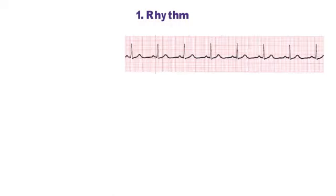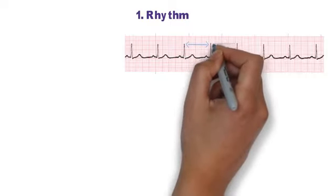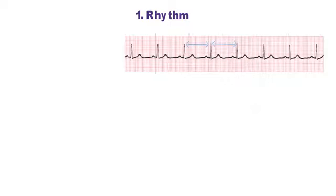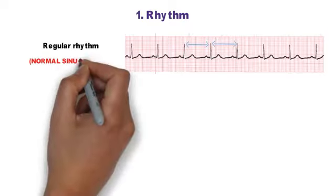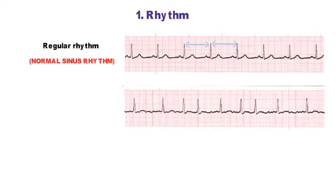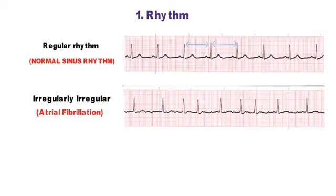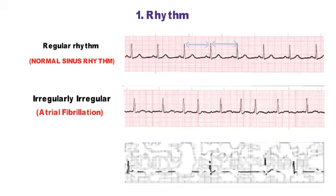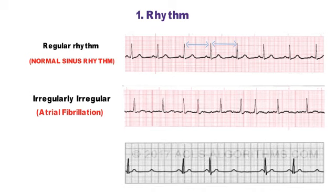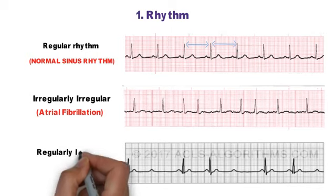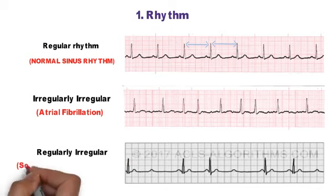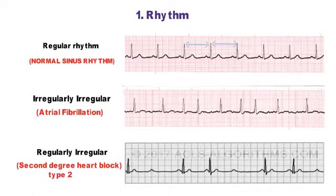Step 1 is Rhythm. To check the rhythm we check the RR interval. In a normal ECG, RR intervals are equal and there is a P-wave before every QRS complex — this is normal sinus rhythm. If the RR interval is not equal and there is no identifiable P-wave, the rhythm is irregularly irregular, which occurs most commonly in atrial fibrillation. A regularly irregular rhythm with regular dropped beats is most commonly seen in second degree heart block type 2.